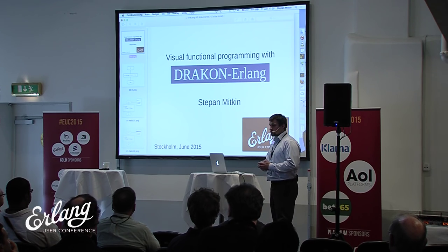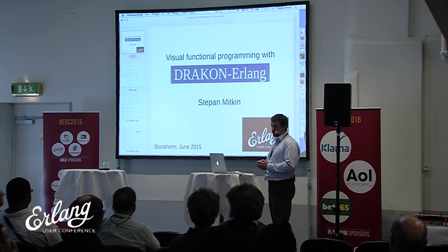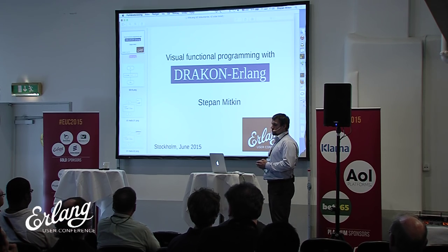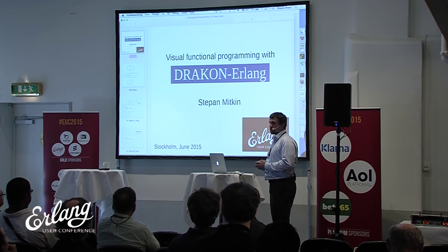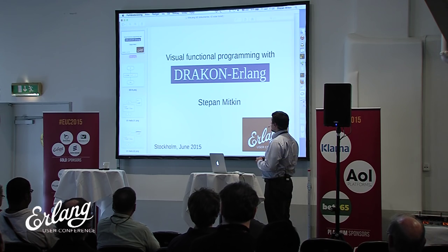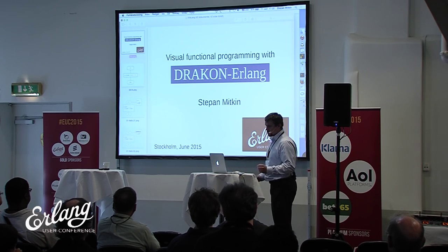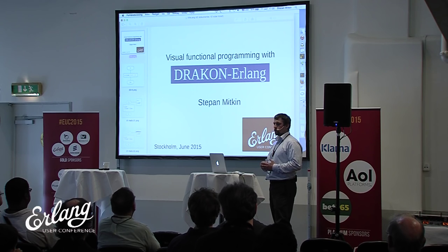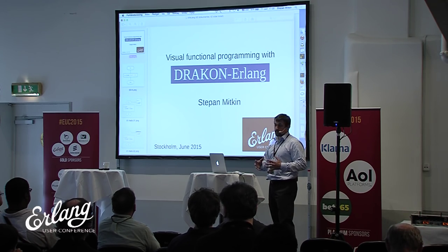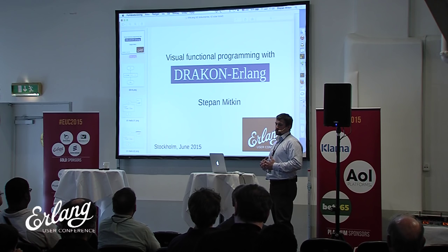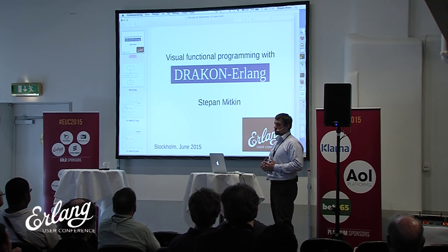What about the uniqueness? DRAKON has several unique features, for example: right is bad, the rule of common fate, silhouette, and many others — some of which we will see today. Erlang is awesome and DRAKON is amazing. I thought maybe I could put these two together and see what comes out, so I wrote a plugin for DRAKON editor that generates source code from DRAKON diagrams.